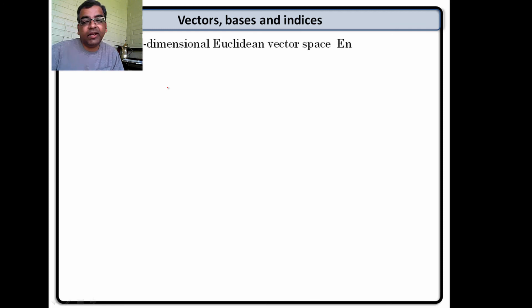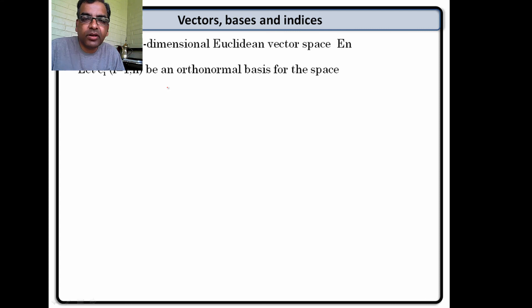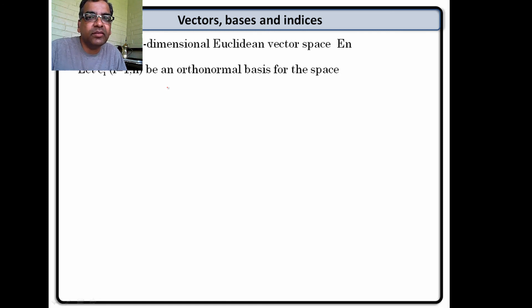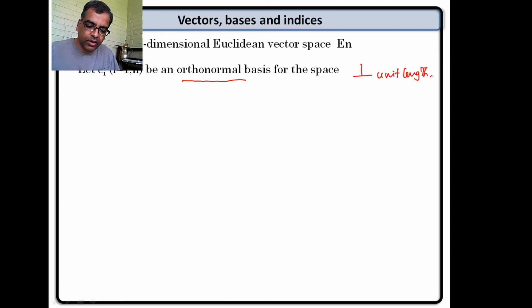So we have a Euclidean space, n-dimensional. There is nothing which says it has to be 3 dimensions. Typically in elasticity we will work in either 2, 3, or 6 dimensions — that is very typical. I will tell you why you work in 6 dimensions when we get to that. In an n-dimensional Euclidean space you can talk about an orthonormal basis. Orthonormal means the basis vectors are perpendicular to each other and unit length.